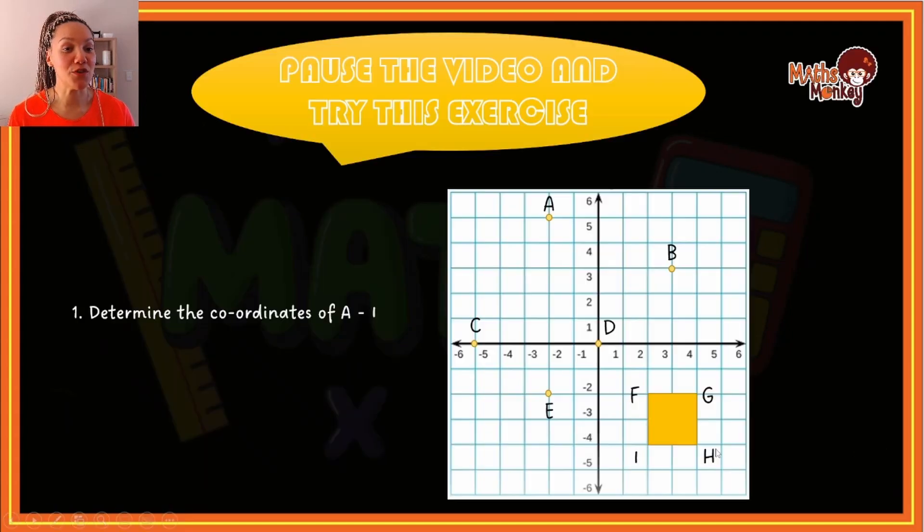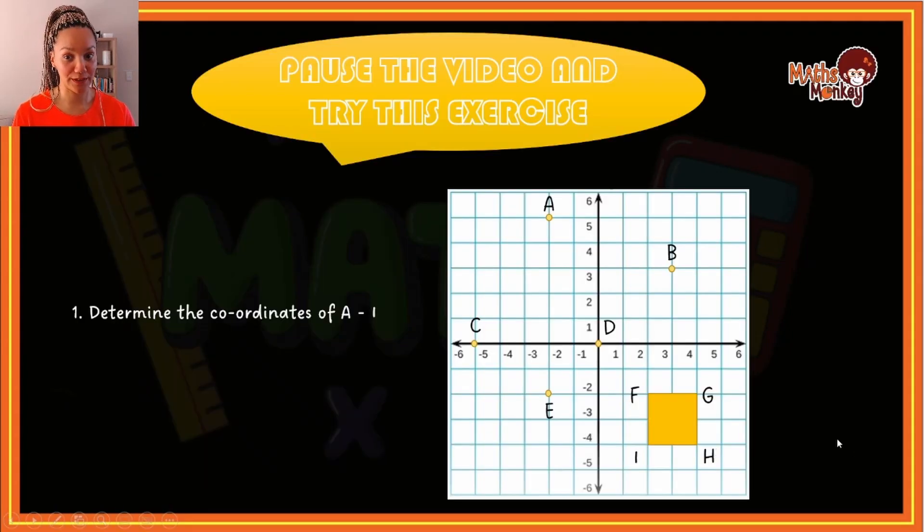Now let's see if you can try some on your own. Okay, so this is a little exercise. I would like for you to pause the video, attempt the exercise by writing down all the coordinates from A to I. And then when you're ready, you can unpause the video and then I can give you the answers and you can mark and check if you got it correct.